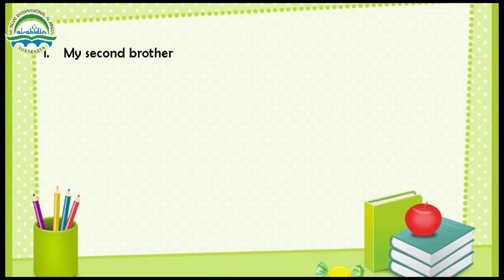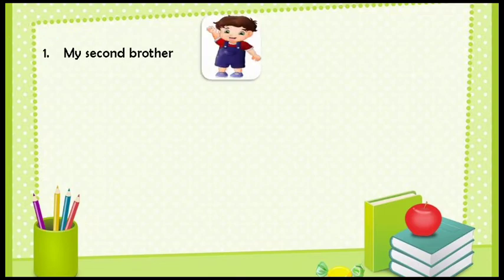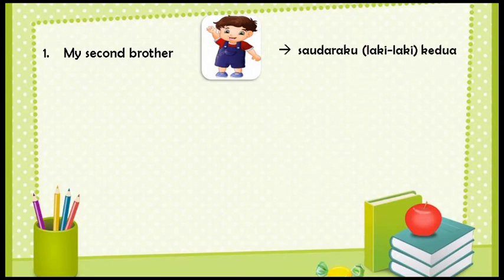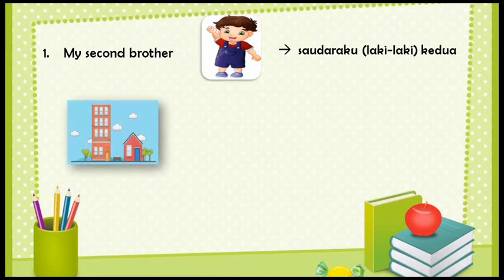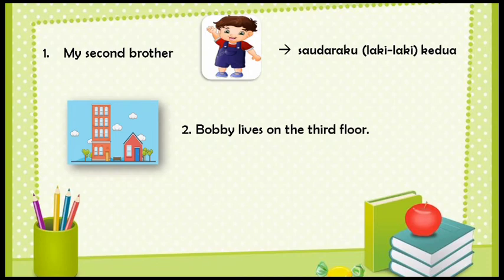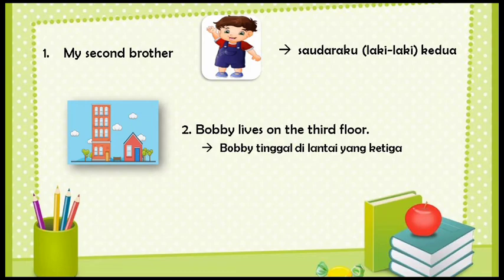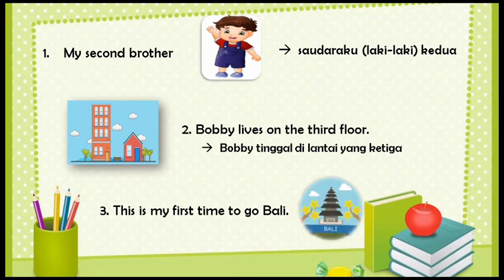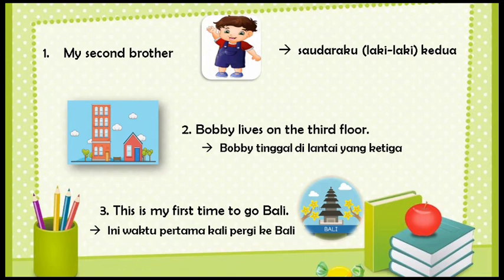There are some examples for ordinal numbers. Number one: my second brother — it means saudaraku laki-laki yang kedua, second means kedua. Number two: baby lives on the third floor — it means baby tinggal di lantai yang ketiga. Number three: this is my first time to go to Bali — it means ini waktu pertama kali pergi ke Bali. Okay kiddos, it's very easy!